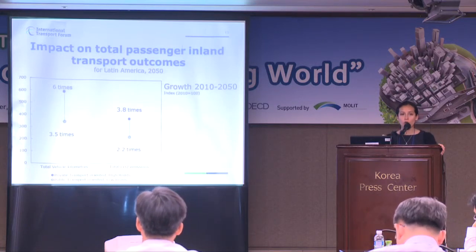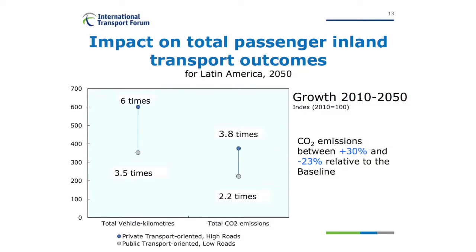We also obtained an idea of what urban policies would mean in terms of global travel and CO2 emissions for Latin America. The difference between our highest and lowest scenario ranged from 3.5 to 6 times the total vehicle kilometers traveled in the region, and from 2.2 to 3.8 times the CO2 emission levels of 2010. This meant that urban policy could account for a margin of plus 30% or minus 20% in CO2 emissions relative to baseline.